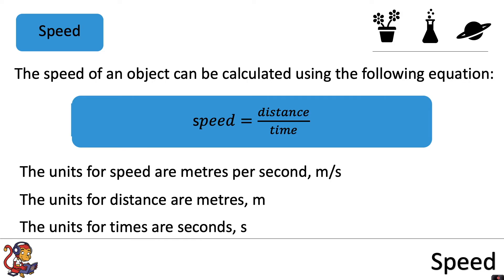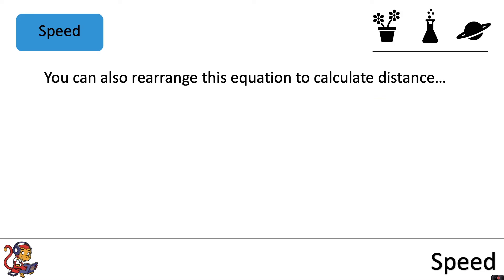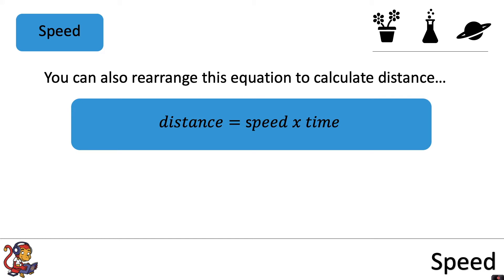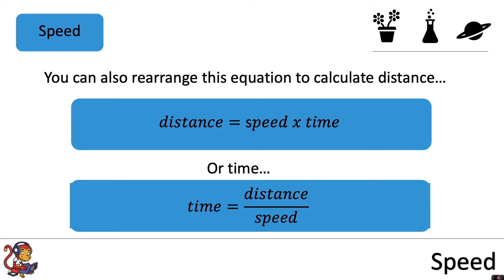You can also rearrange this equation to calculate distance: distance equals speed times time. Or you can rearrange it to calculate time: time equals distance divided by speed. So we can use these equations to calculate the speed of an object, how far it's traveled, or the time it took to travel a particular distance.